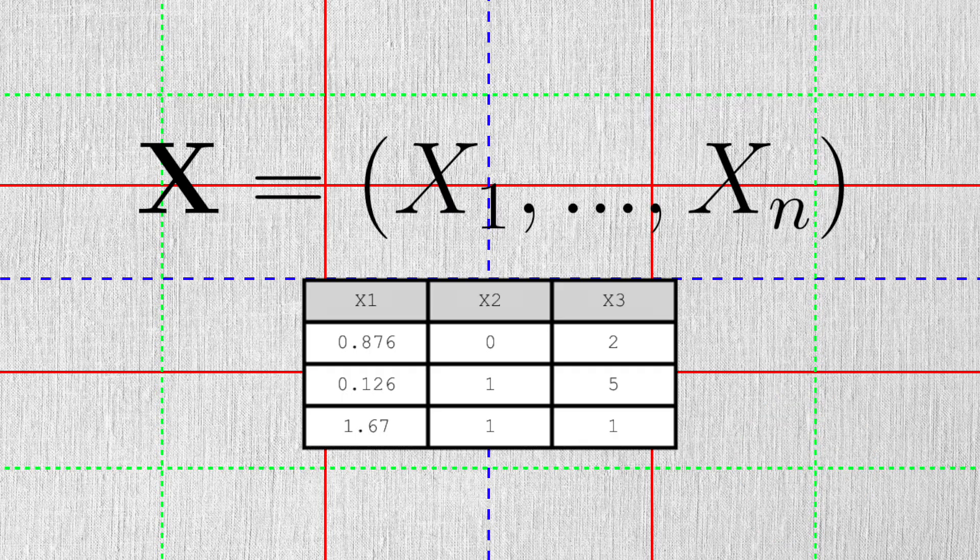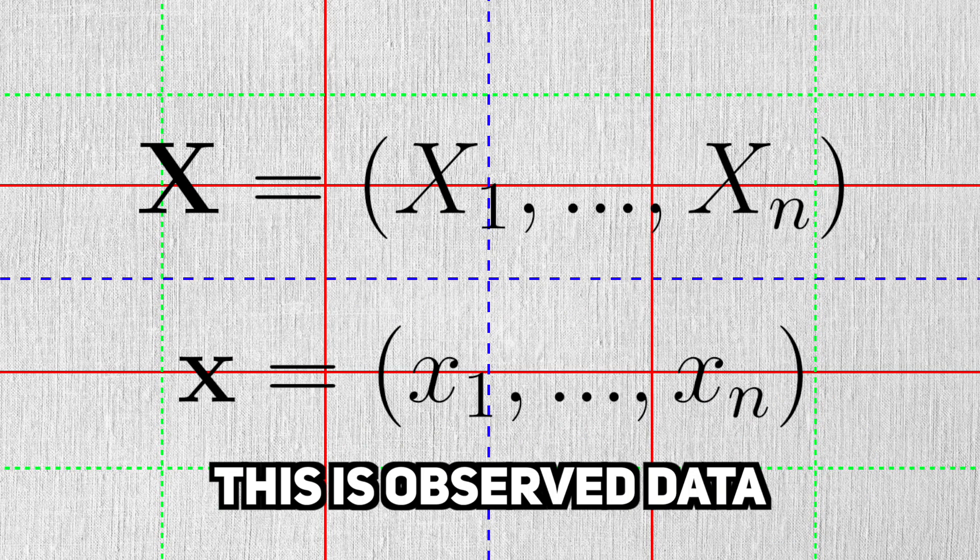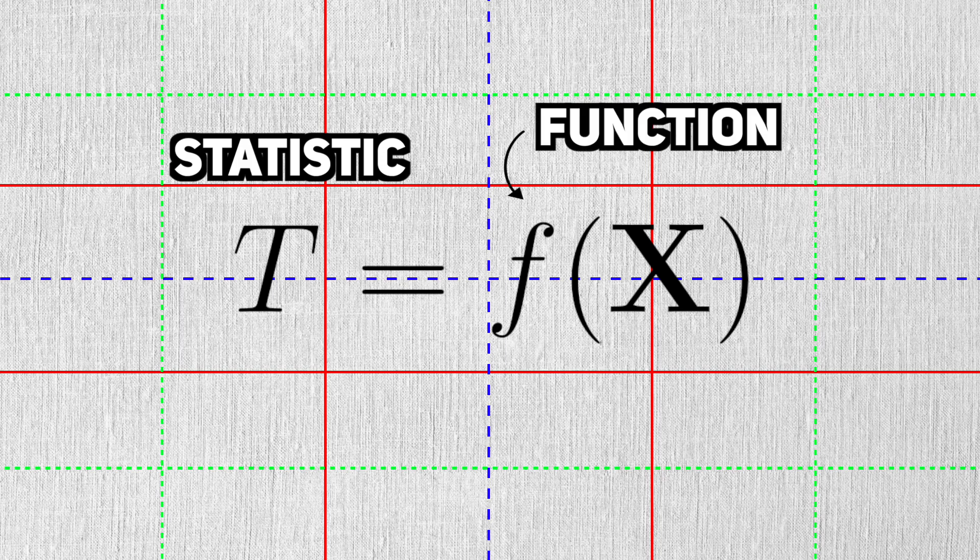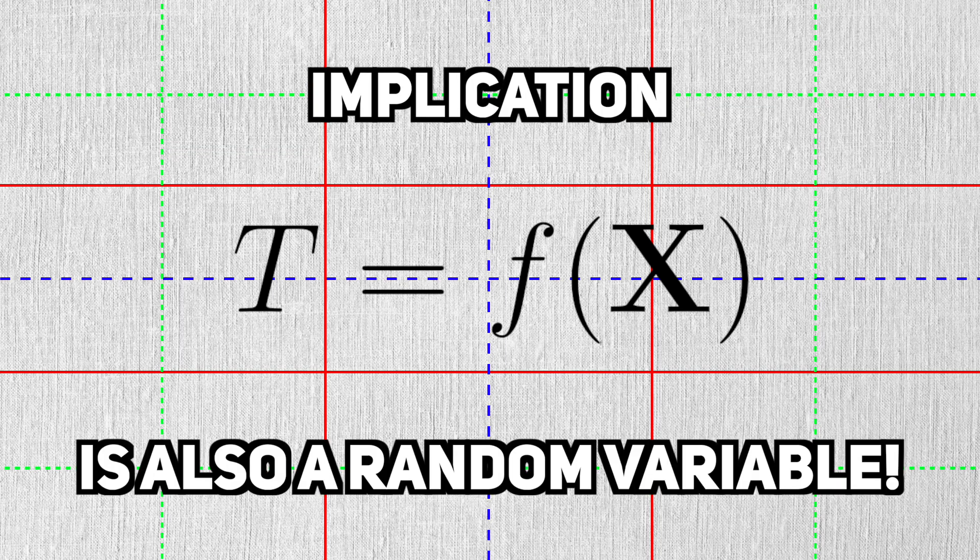Remember that when we collect data, we often assume that it is a realization of some random variable, but before we observe it, it's still random. So, a statistic is a function of random variables. This means that statistics themselves are also random variables.